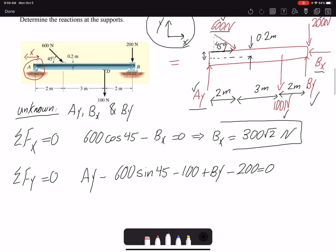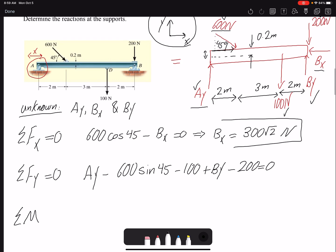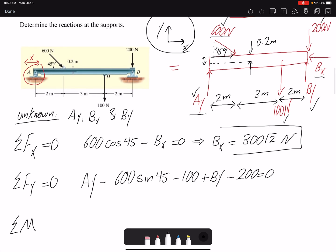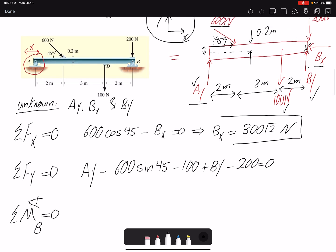I have Ay and By here, and then I have summation of moments. I have a choice of taking a moment equation about any point I want, but you can see a lot of forces are happening at B. If I write a moment equation about point B, I get rid of all these three forces, which makes my equation simpler and I'm less likely to make a mistake. So summation of moment about point B equals zero. You always need to write which point you're writing a moment equation about. I assume counterclockwise to be positive.